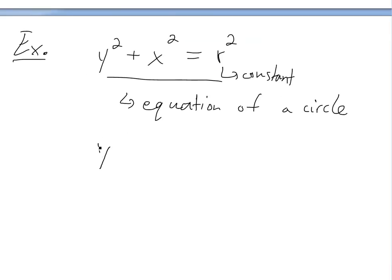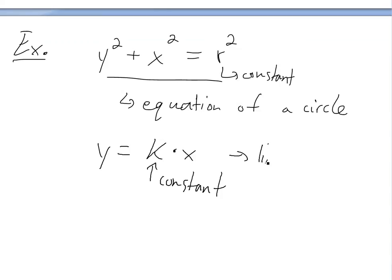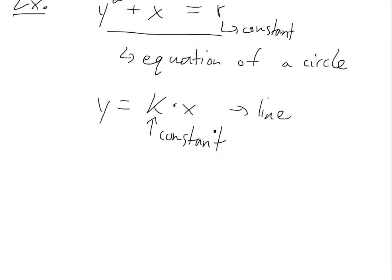Now let's look at a straight line: y equals k times x, where k is a constant. This is just an equation of a line. As you change k, you're going to have different lines through the origin.